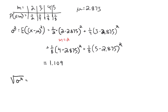The standard deviation, which is the square root of the variance, is roughly 1.053. So we can calculate the expected value (the mean), the variance (weighted average of squared distances from the mean), and the standard deviation (square root of variance) for any discrete distribution.